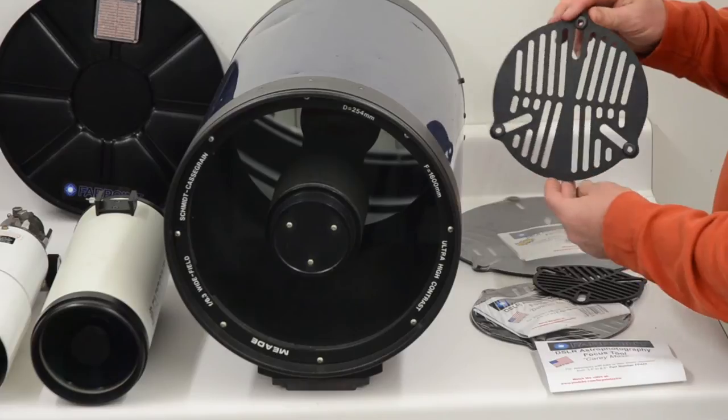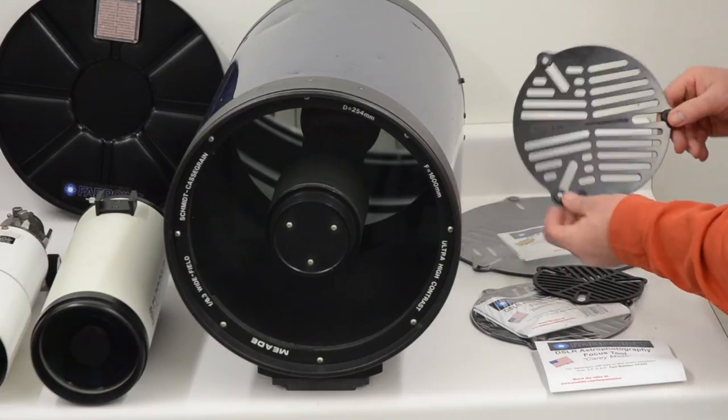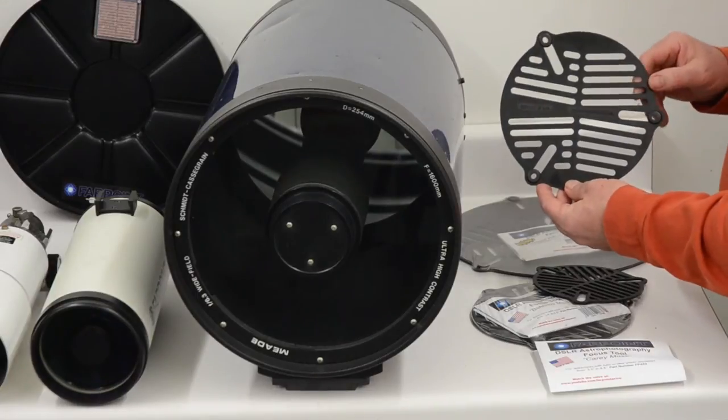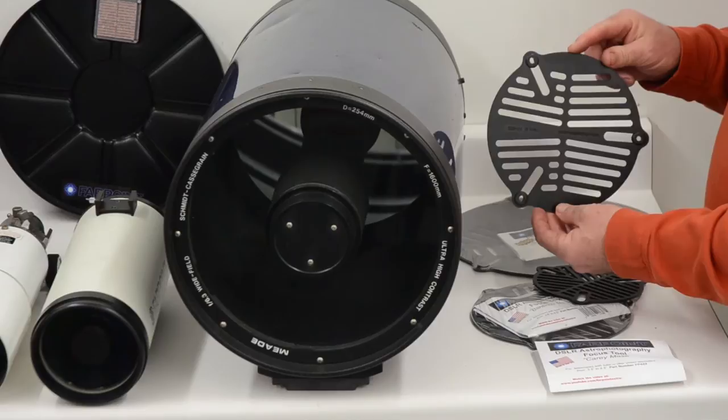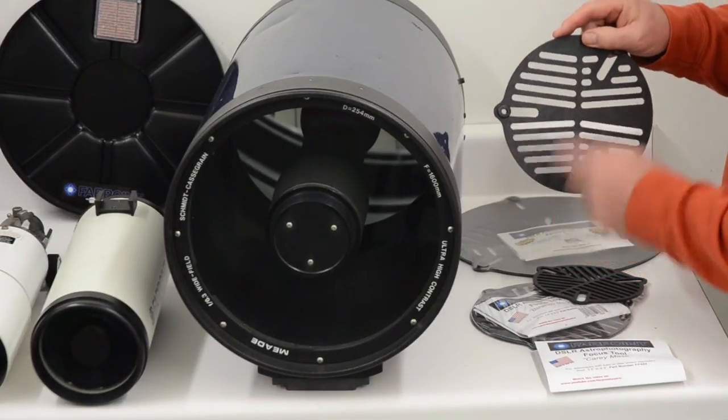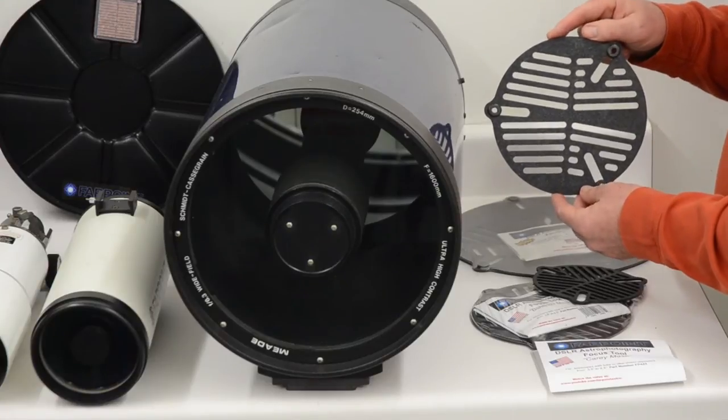If you mount them up there, they are going to work, and the image will project still. On the other hand, if you always mount them the same way, you will get skilled in deciding whether you are inside or outside of focus. So in the case of this Carey mask here, I would always run this line north-south, up-down.